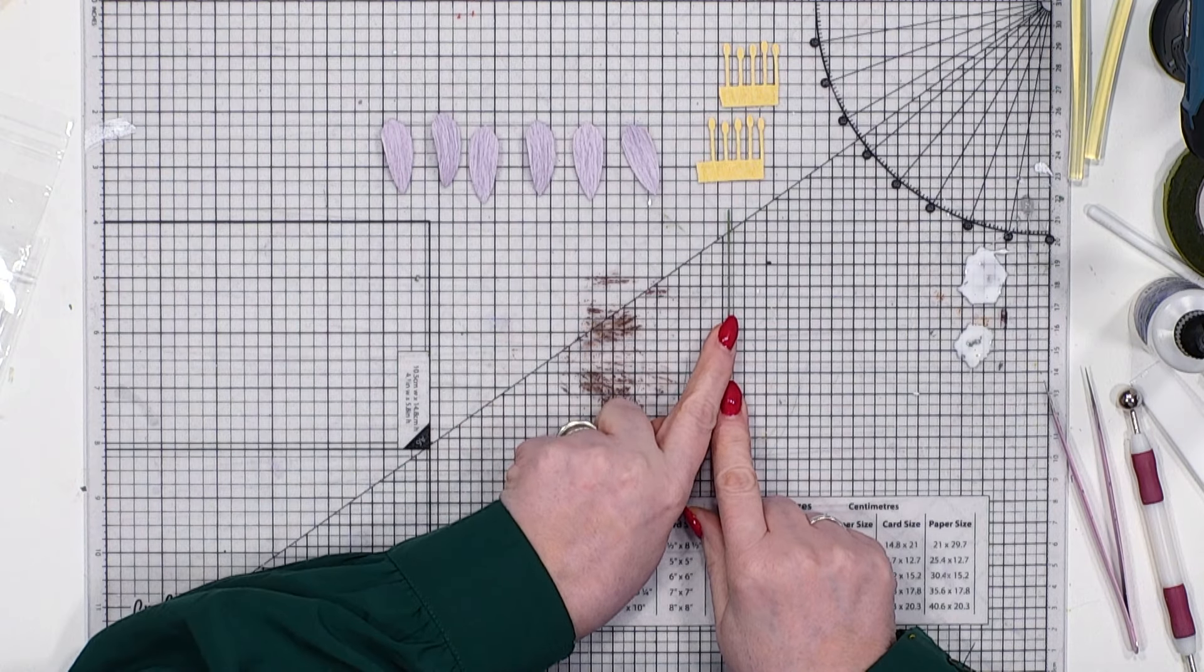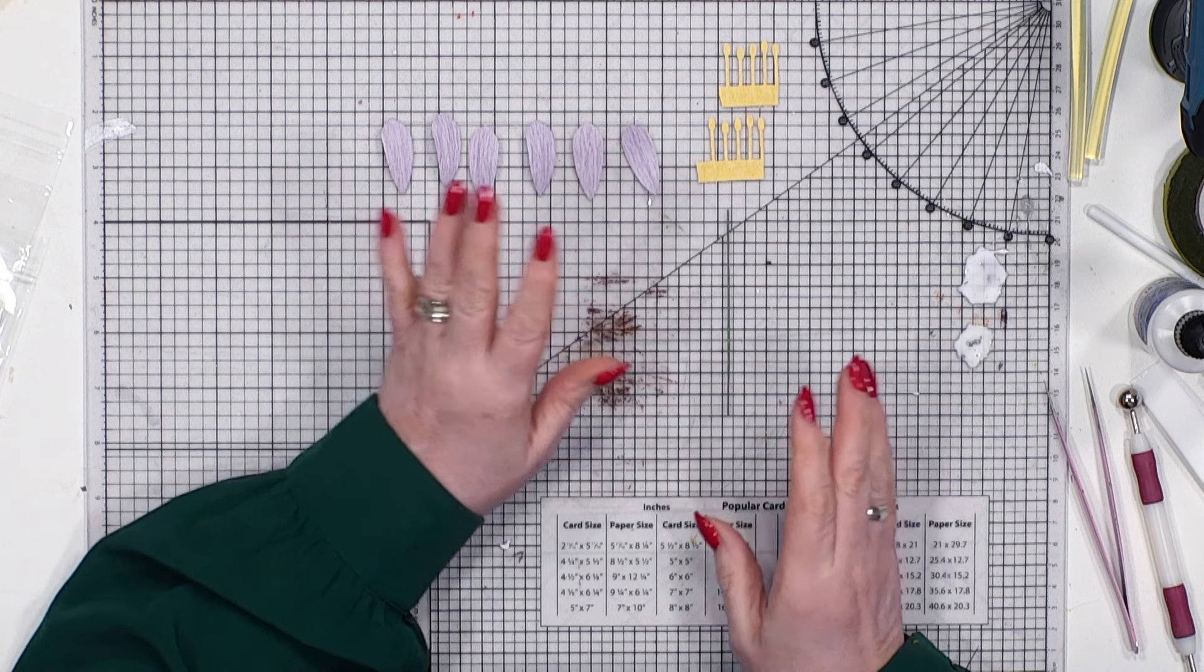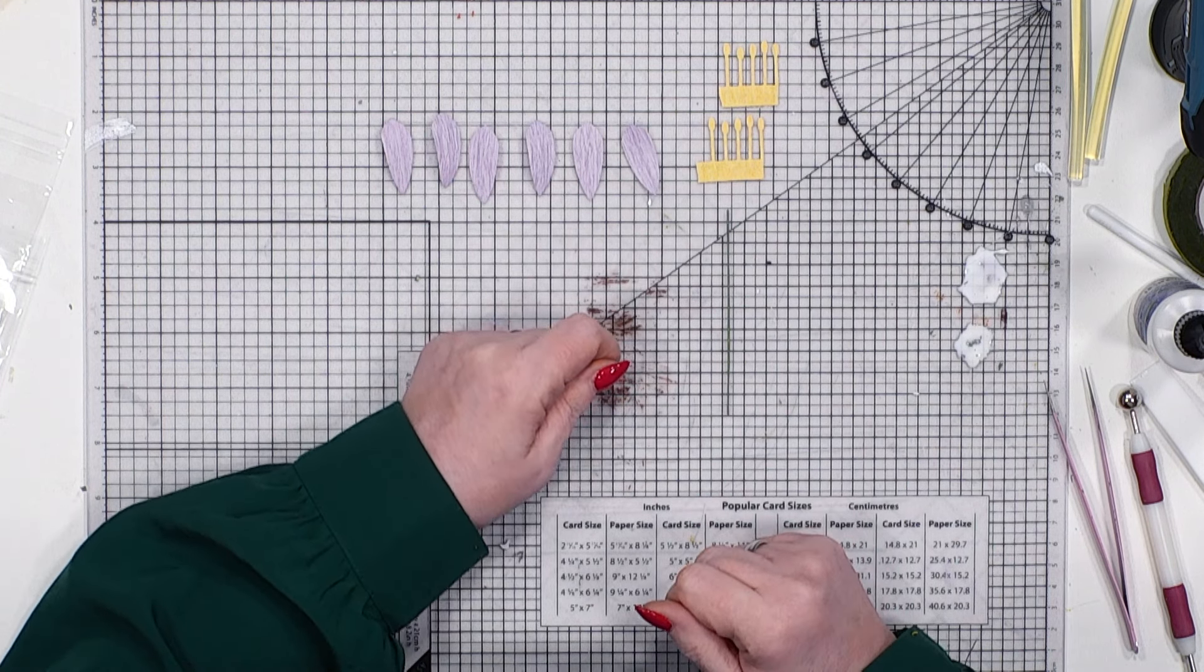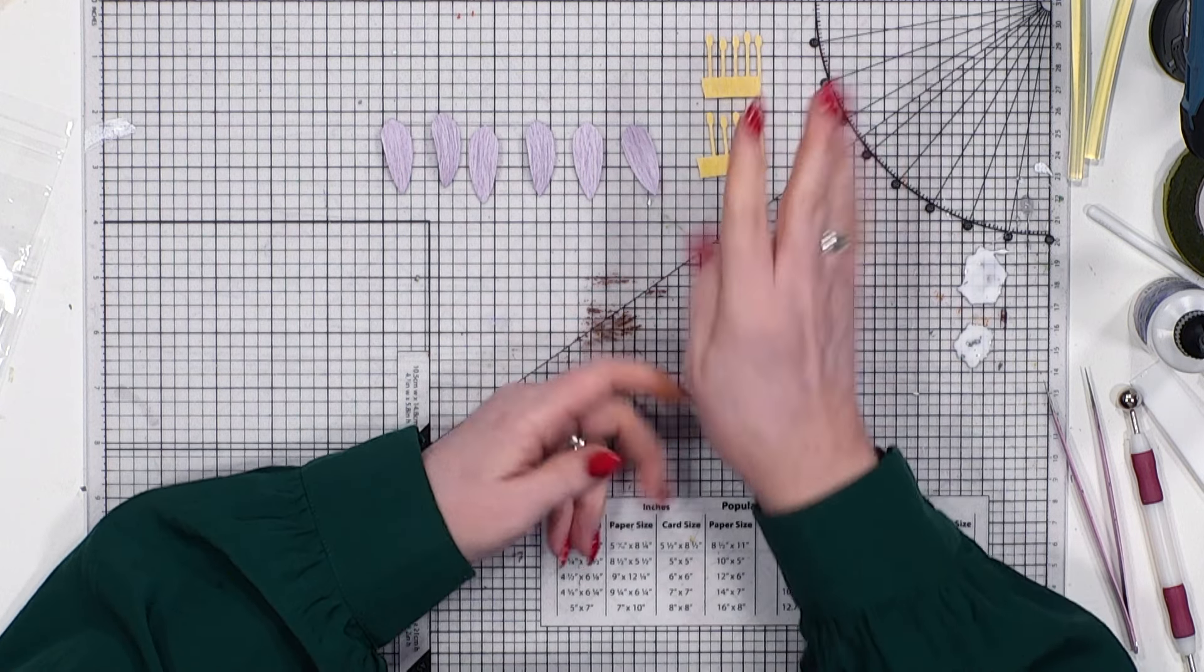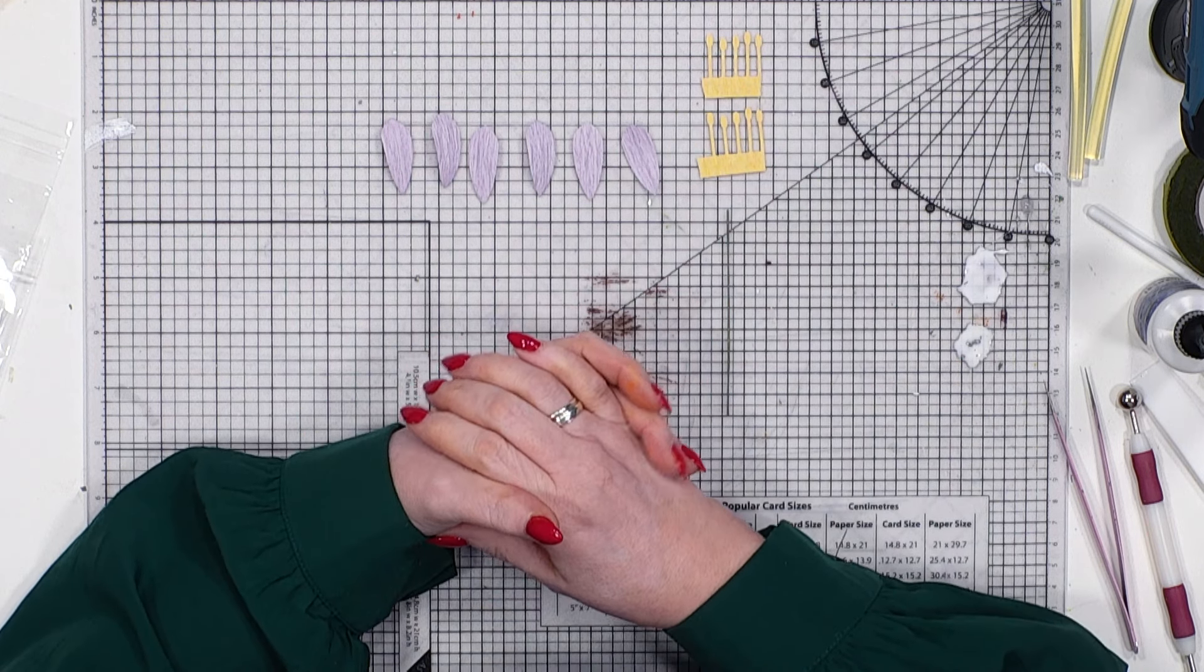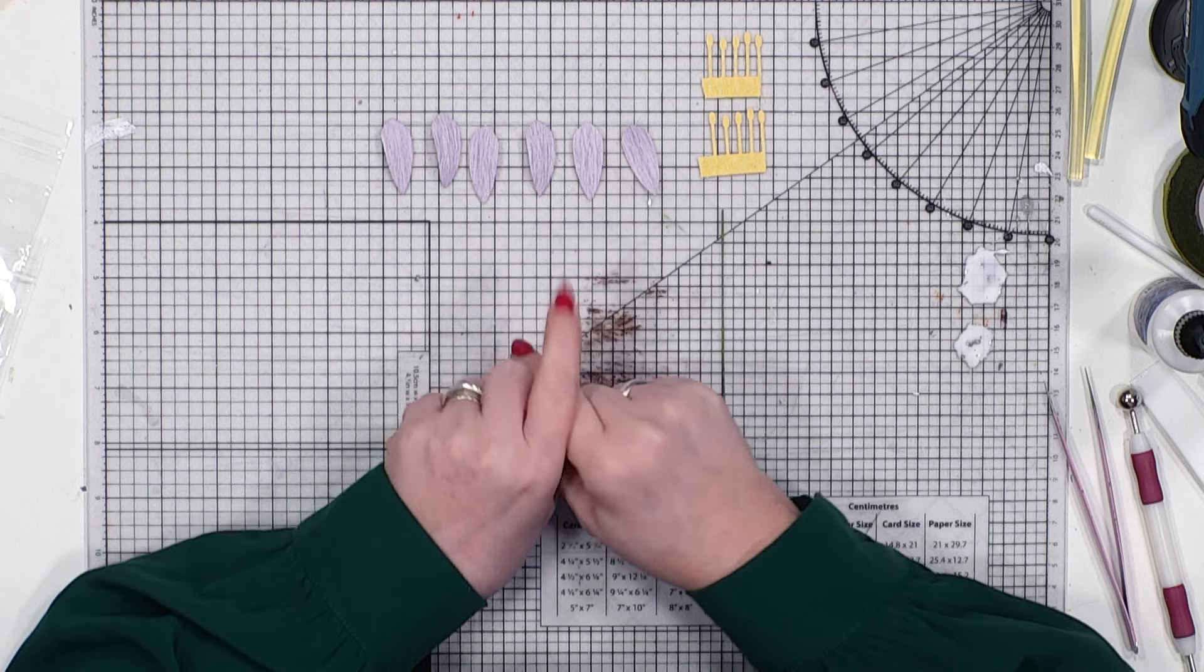Now again, couldn't be any easier. If you blink you will miss it. So to start off with I am using one of our green paper wrapped wires and I've cut it to about 10 centimeters just to get us going and started. I've got two of the stamen, probably only need one, but I quite like to fill the flower and then I'm working with the bluebell.